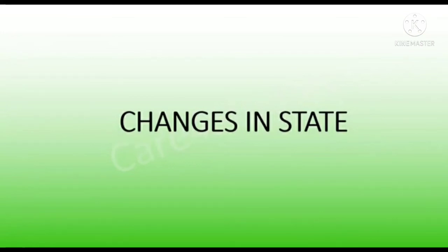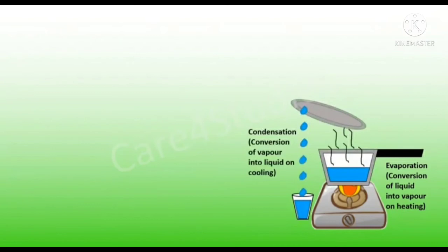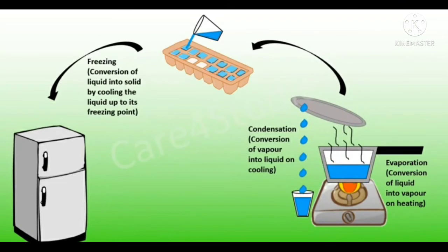Now, changes in state due to heating. When water boils, water changes to vapor on heating — this process is called evaporation. And vapor changes to water on cooling — this process is called condensation. We can also convert water into ice by cooling the liquid up to its freezing point. This is an example for change in state due to heating.